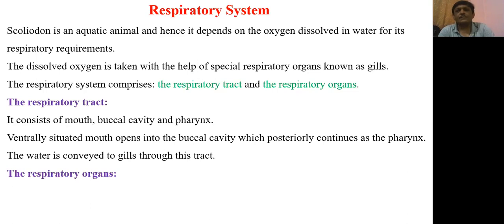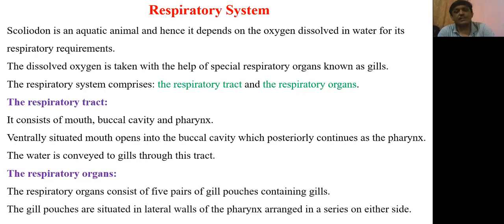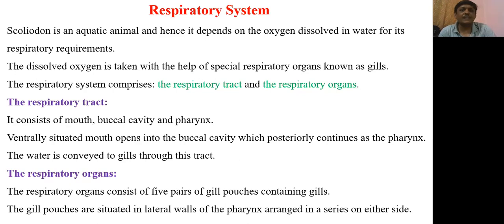The second part is the respiratory organs. The main respiratory organ in Sclerodon are the gills, which are present in gill pouches. There are five pairs of gill pouches present on the lateral wall of the pharynx. The gill pouches are situated on the lateral wall of the pharynx and arranged in a series — five gill slits on one side and five on the other side.